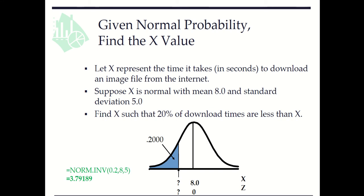We want to find x such that 20% of download times are less than x. So here we are looking for a value for which the cumulative probability is 0.2.